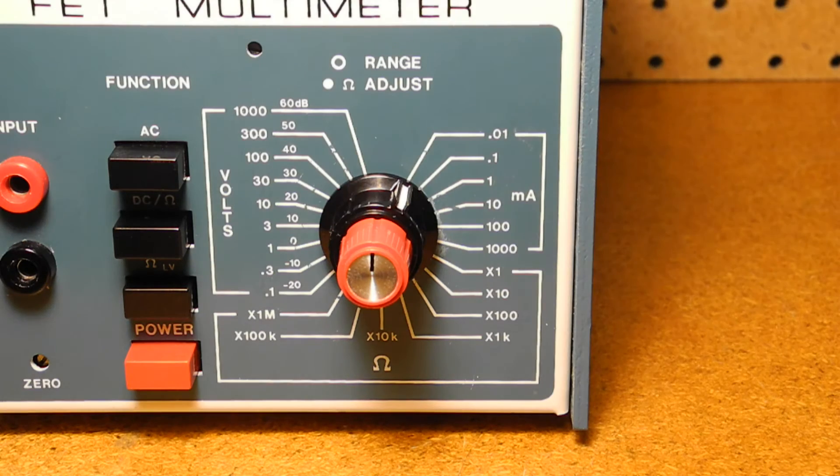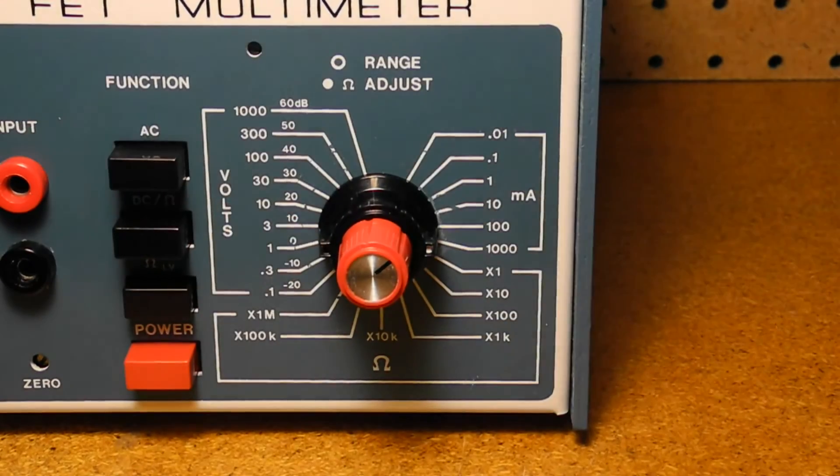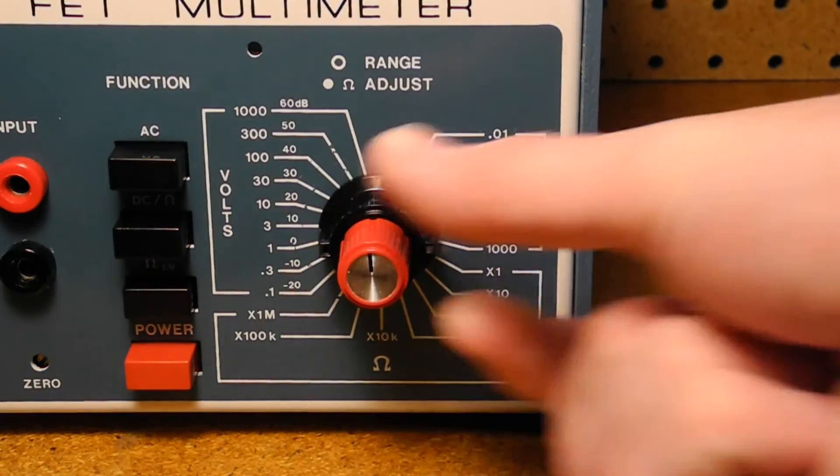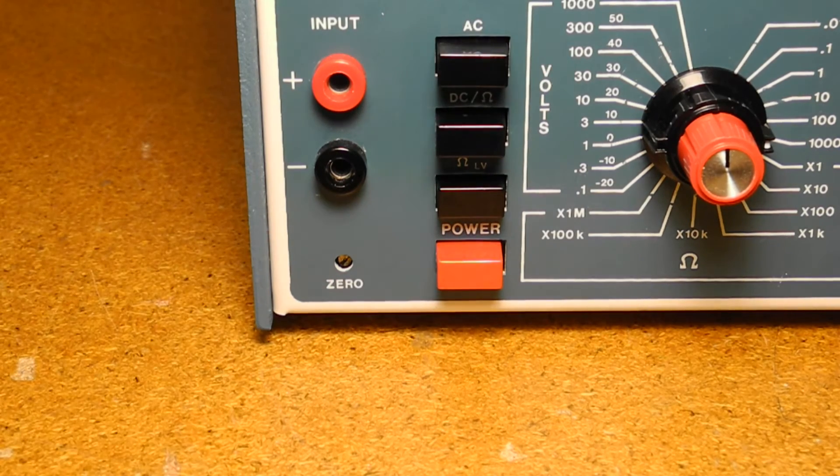The range switch selects the voltage, current, and resistance ranges. It has 24 positions with a couple of unused positions at the top. The red concentric knob is for adjusting for zero on the resistance ranges when the test leads are shorted. At lower left is a trimmer adjustment for setting the zero value. It needs to be adjusted occasionally.